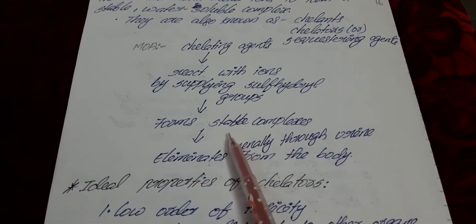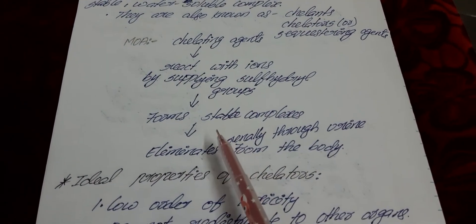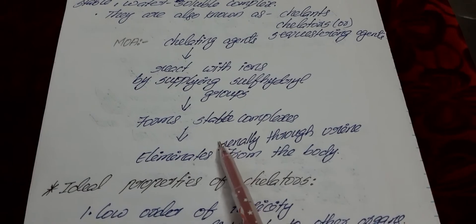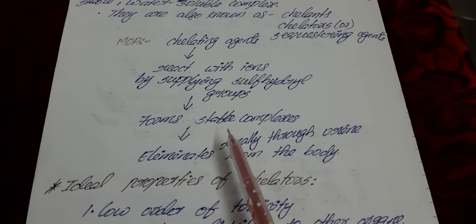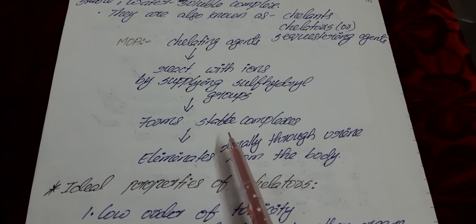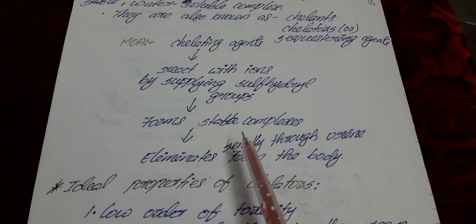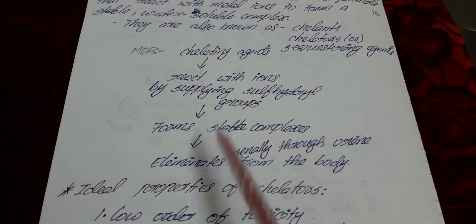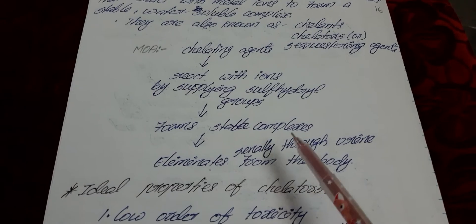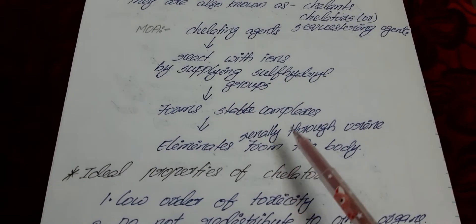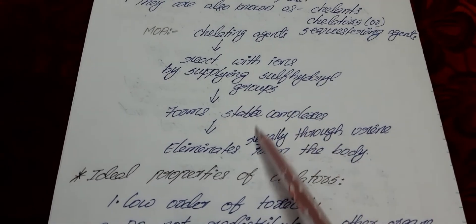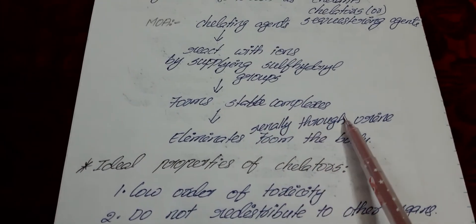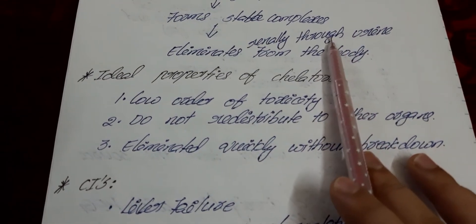The mechanism of chelating agents: normally these heavy metals are not soluble in water and won't eliminate easily from the body. Chelators increase the elimination of heavy metals from the body by excreting them through the urine.